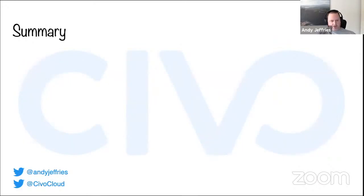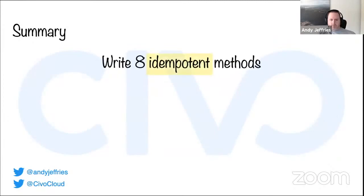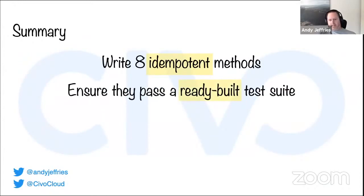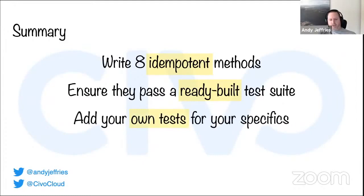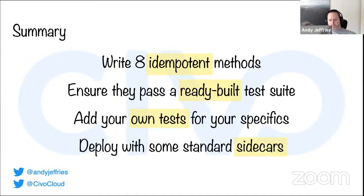In summary, to write a CSI driver, you need to do a few simple steps: write eight idempotent methods — idempotent meaning if called more than once, they end up in the same good state; ensure they pass the ready-built CSI sanity test suite, which is the bare minimum for Kubernetes compliance; add your own tests for your specific functionality using a fake driver; and deploy them with standard sidecars into a cluster. We haven't released the source code to the Civo CSI driver yet, but that may happen if there's enough interest — it's not overly secret code.